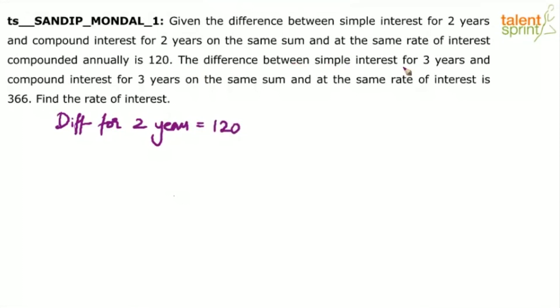The difference between the simple interest for 3 years and compound interest for 3 years on the same sum at the same rate of interest is 366. So, difference for 3 years is equal to 366.